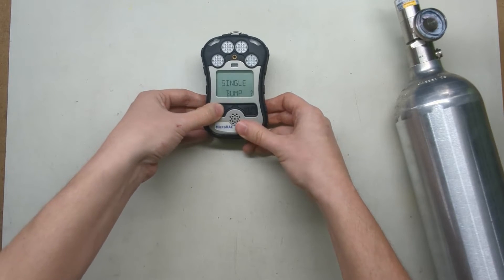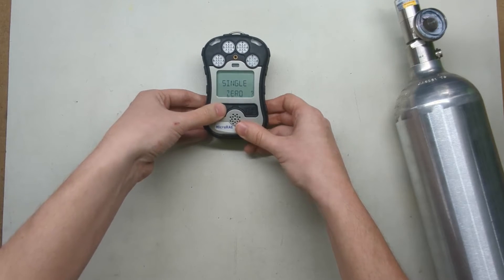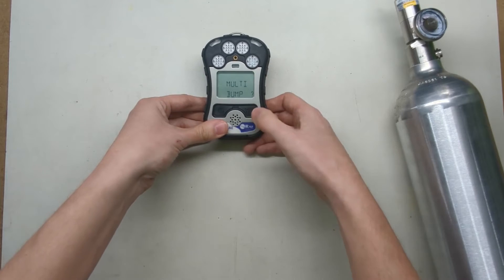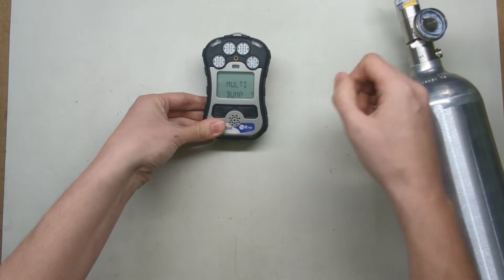It's going to say single bump. We don't want to do a single bump, that's for single gas cylinders. Single zero, no. Single span, no. Multi bump - if you wanted to do a bump test, this is the menu you would use. Press the button, attach the cal gas and turn it on.